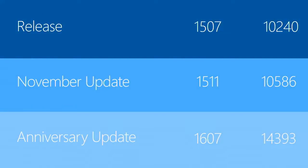These versions are going to add more features to both the platform for us as app developers, but also just the UI in general for users. So we're seeing three major releases so far to Windows: the original release, which was last year sometime; the November update, which funny enough came in November; and the Anniversary Update, which came in about August this year.